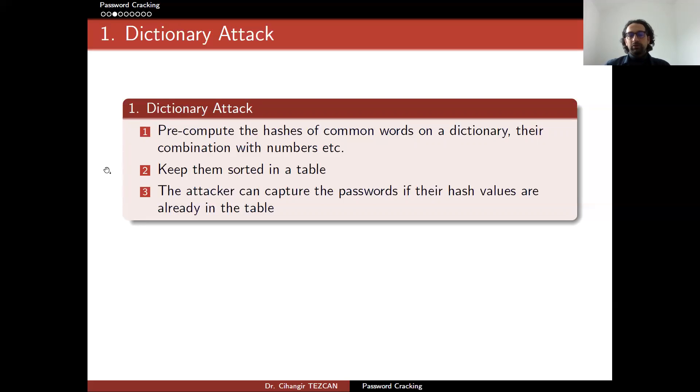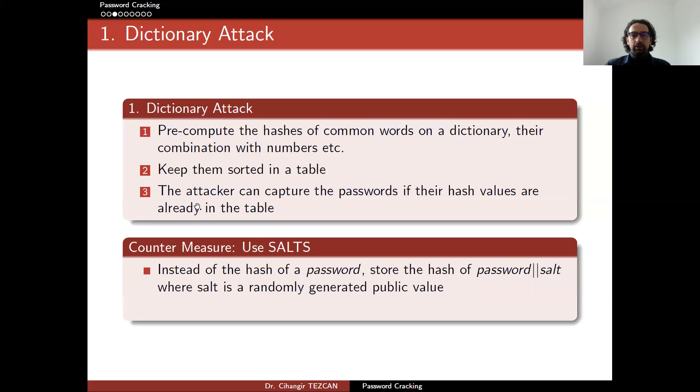Then you can sort them, which would take some time. Because if you don't do it on the RAM, it wouldn't be that fast. But anyway, once you do it, this is the pre-computation. So you do it before actually capturing anything. But once you capture the database or hashes of any passwords, now, since you have the dictionary, use your dictionary and check if you know the initial password. So this way, you can capture a lot of passwords.